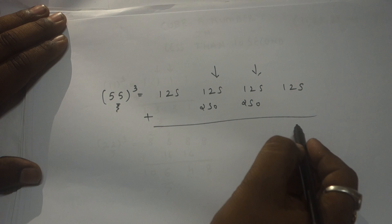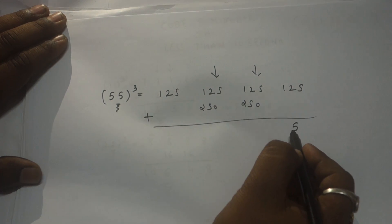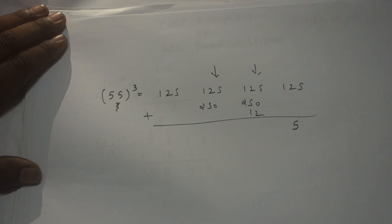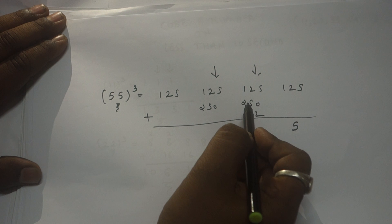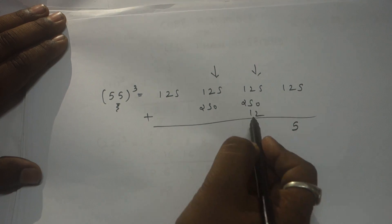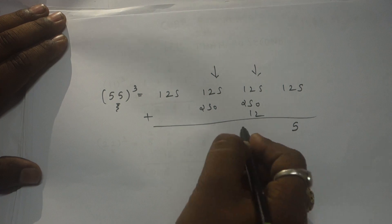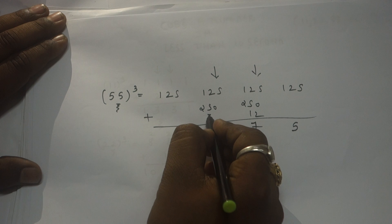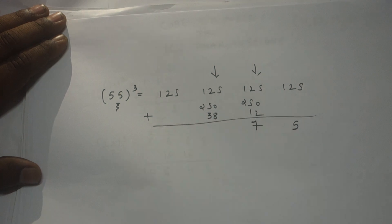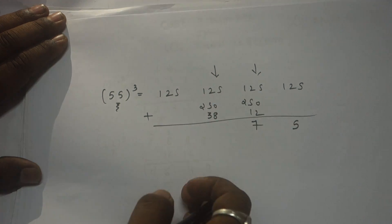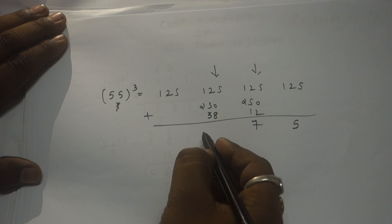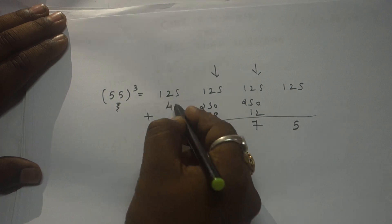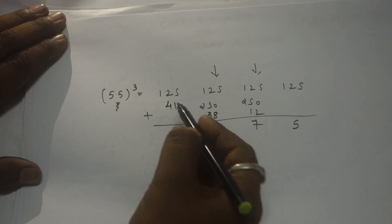Last step: add the numbers. 125 — cannot write 125 directly, so write 5 and carry 12 forward. Next: 250 + 125 = 375, plus 12 carry = 387. Cannot write 387 directly, so write 7 and carry 38 forward. Then: 250 + 125 = 375, plus 38 = 413. Write 3 and carry 41 forward. Last chip: 125 + 41 = 166.